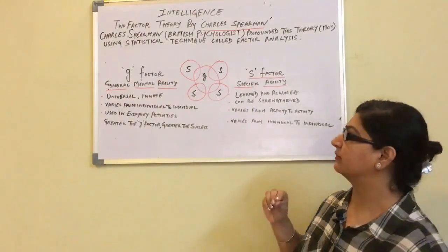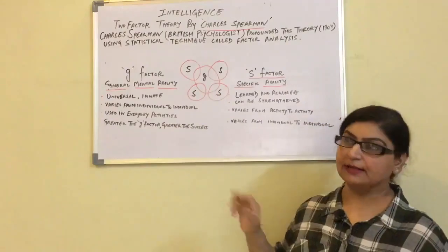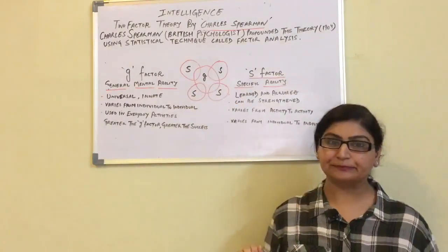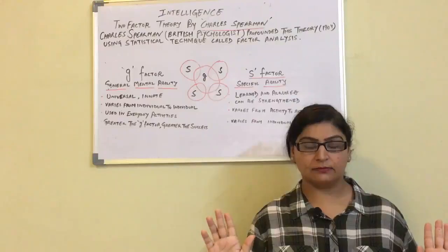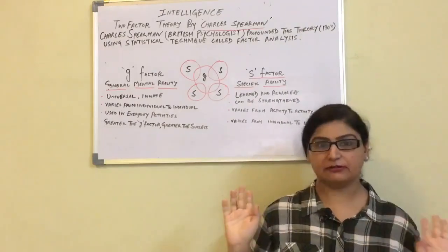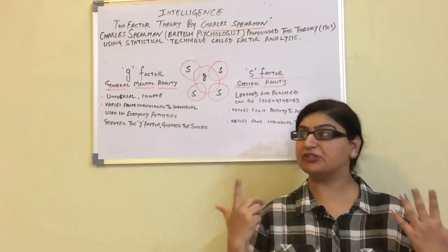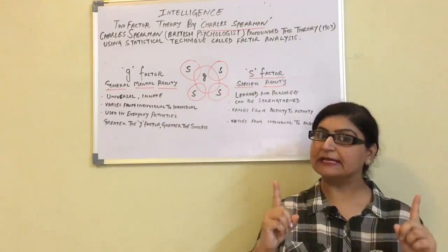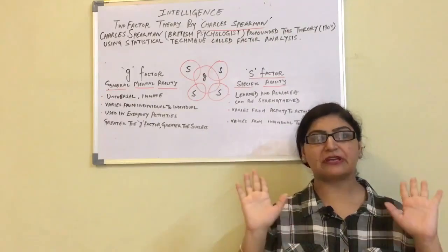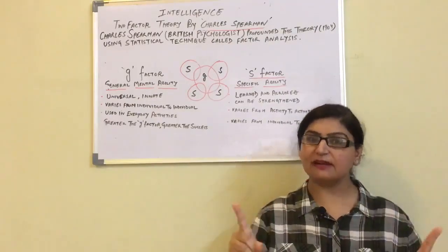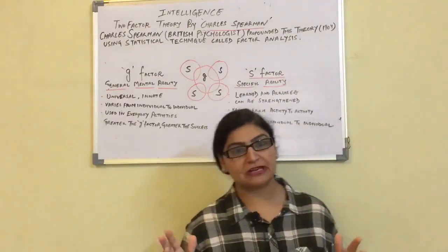This is what we mean by S-factor and G-factor. Looking at the diagram, you can see G at the center with overlapping S factors — meaning G-factor is used in all abilities. A doctor needs G-factor to learn and acquire knowledge, but what makes him specialized and distinctive is his S-factor. So in any task, both G and S are required, but G-factor must be present as the central factor that influences your cognitive abilities.